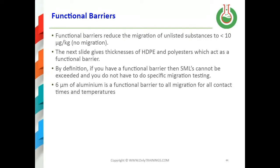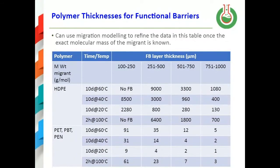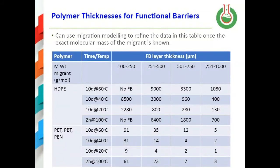Six microns of aluminium acts as a functional barrier to migration at all contact times and conditions, provided the aluminium contains no pinholes — which is generally assumed. Looking at polymer thicknesses for functional barriers, HDPE with a testing condition of 10 days at 60°C and a low molecular weight migrant has no thickness sufficient to prevent migration through to food. In contrast, the layer thicknesses that constitute a functional barrier for polyesters are much thinner than those for HDPE.